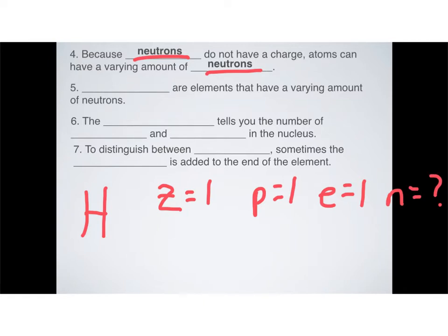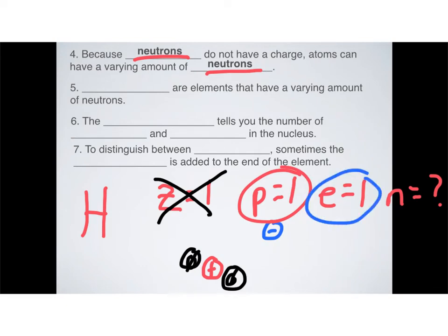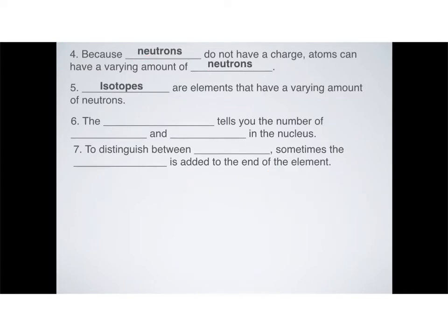Let me draw a little diagram of what that might look like. A hydrogen atom has to have 1 positive charge, so it has 1 proton, and 1 negative charge around the outside. I can have a different number of neutrons, because neutrons don't have a charge. So that means I could have no neutrons, or I could have 1 neutron, or I could have 2 neutrons — that's kind of the limit for hydrogen. Atomic number does not give us the number of neutrons; it only tells us the number of protons and electrons. There is a special name for elements that have a varying amount of neutrons: they're called isotopes.